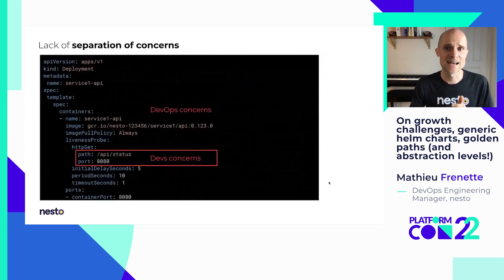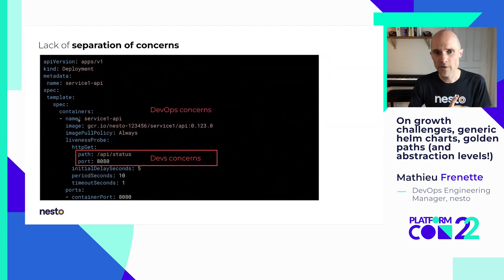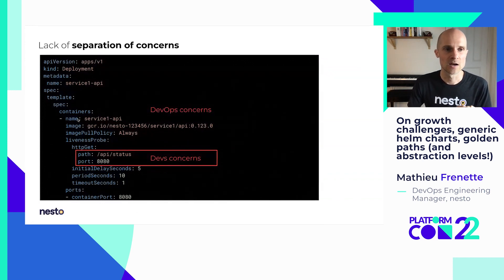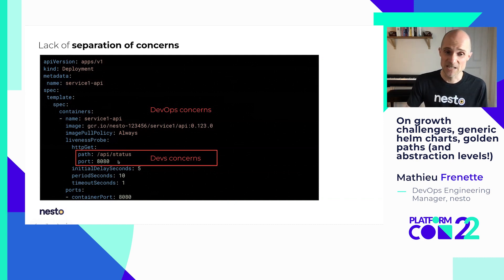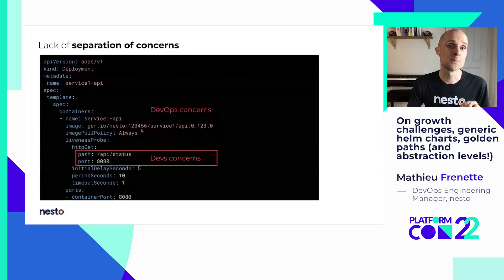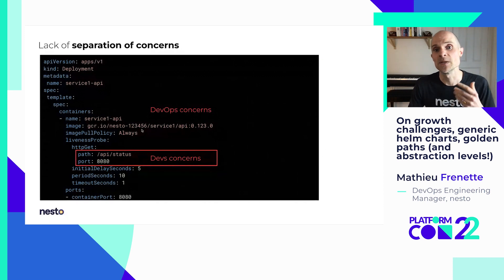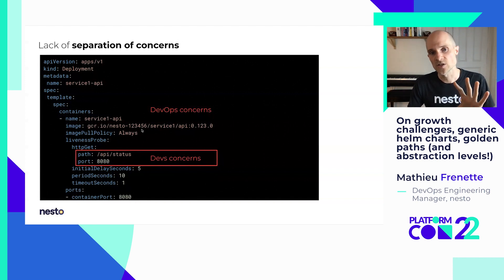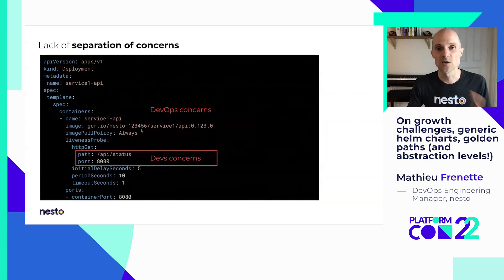The other thing is that there was no separation of concerns between what developers cared about. For example, in a Kubernetes deployment resource, developers care more about some specific configuration values, whereas DevOps care more about the boilerplate that's repeated across multiple microservices. All of that was just fused together in those files and it was difficult to collaborate.